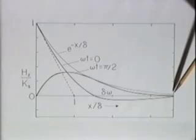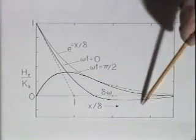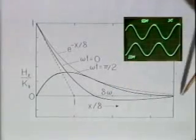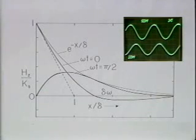There's also a phase shift with x caused by the propagation of this diffusion wave into the conductor. By looking at the probe signal on an oscilloscope, we can see this phase shift as the probe is withdrawn.